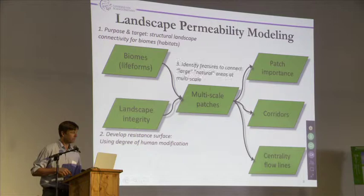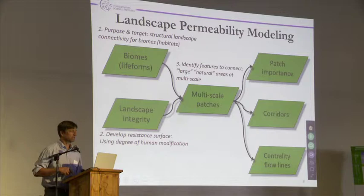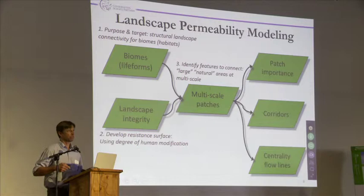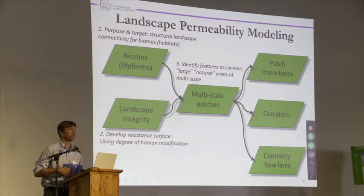We're also identifying features to connect — those are large natural areas — and we're doing that at multiple scales. Some of the cautionary notes that Tabitha was talking about: we need to be very clear about our assumptions and thresholds, and what those are based on. What I'm trying to do is reduce as many of those broad assumptions as possible. My assumption is essentially bigger is better, larger is better, more natural is better. There's no threshold set — it's a continuum, it's a gradient.